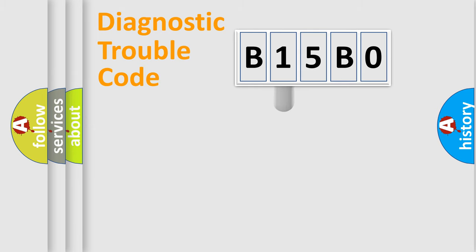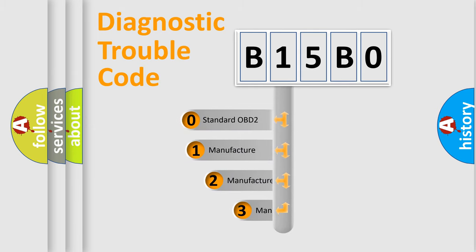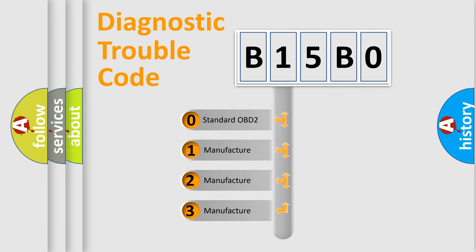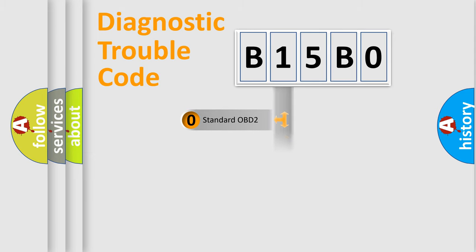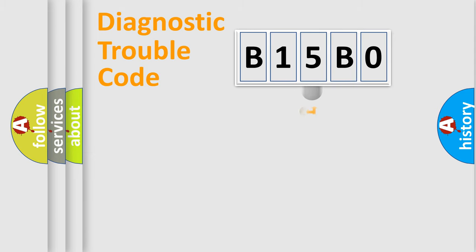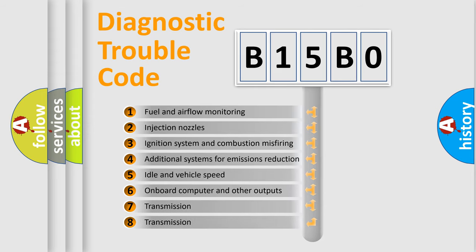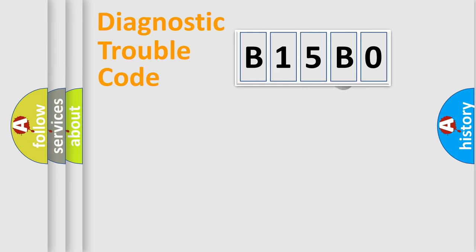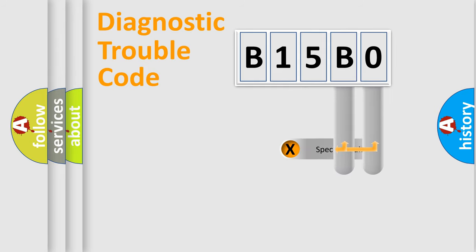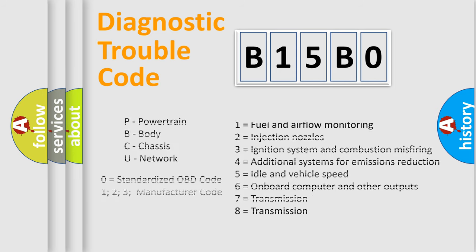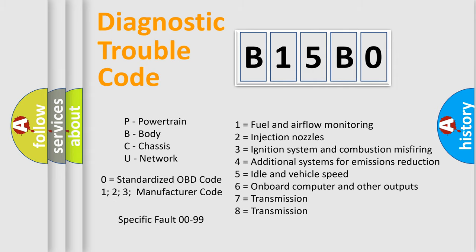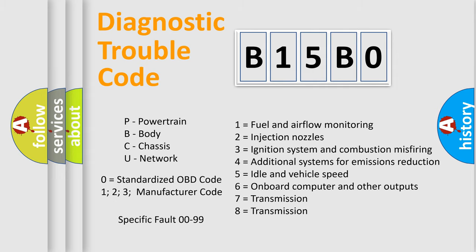This distribution is defined in the first character of the code. If the second character is expressed as zero, it is a standardized error. In the case of numbers 1, 2, or 3, it is a more manufacturer-specific expression of the car's error. The third character specifies a subset of errors. This distribution is valid only for the standardized DTC code, and only the last two characters define the specific fault of the group.